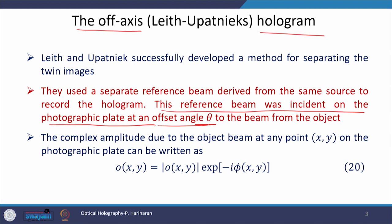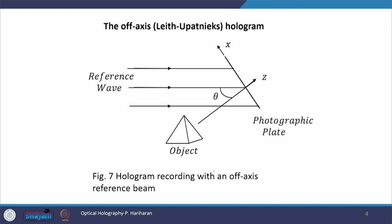The new reference beam is incident on the photographic plate at an offset angle theta to the beam from the object. The complex amplitude due to the object beam at any point x, y on the photographic plate can be written as O(x,y) equal to modulus of O(x,y) and its phase part in the exponential. The schematic representation of this off axis hologram is shown in figure 7, where the reference beam is directed from the source to the photographic plate, and the photographic plate also receives scattered waves from the object.